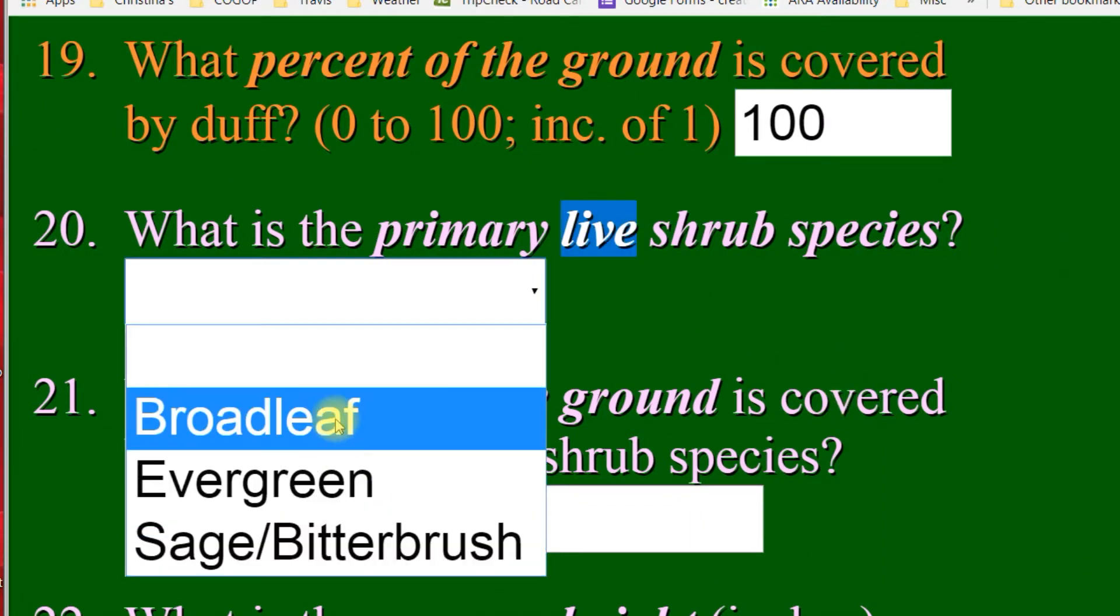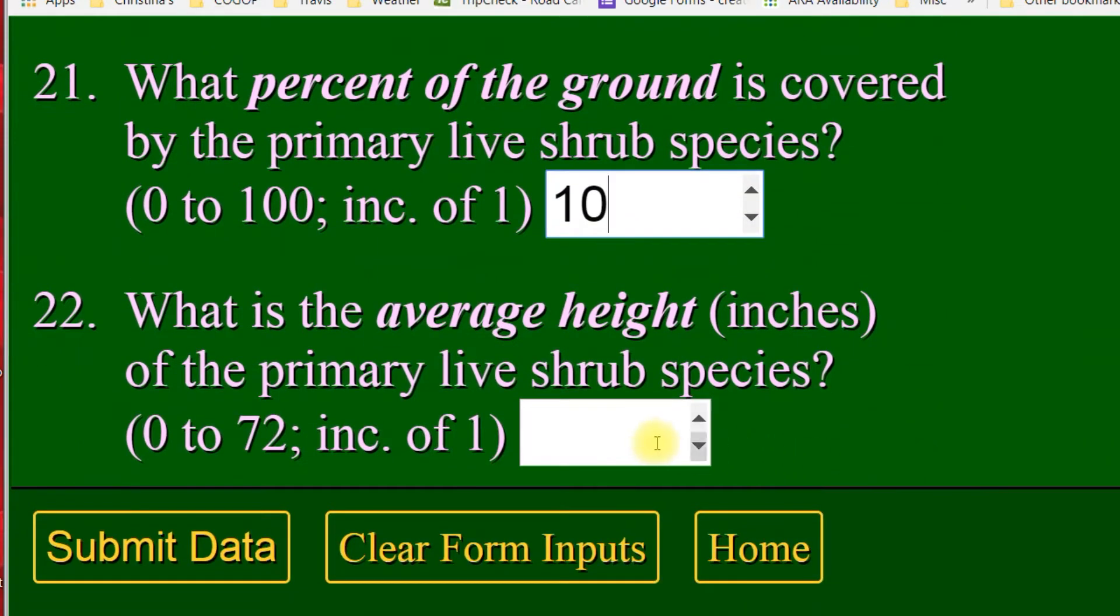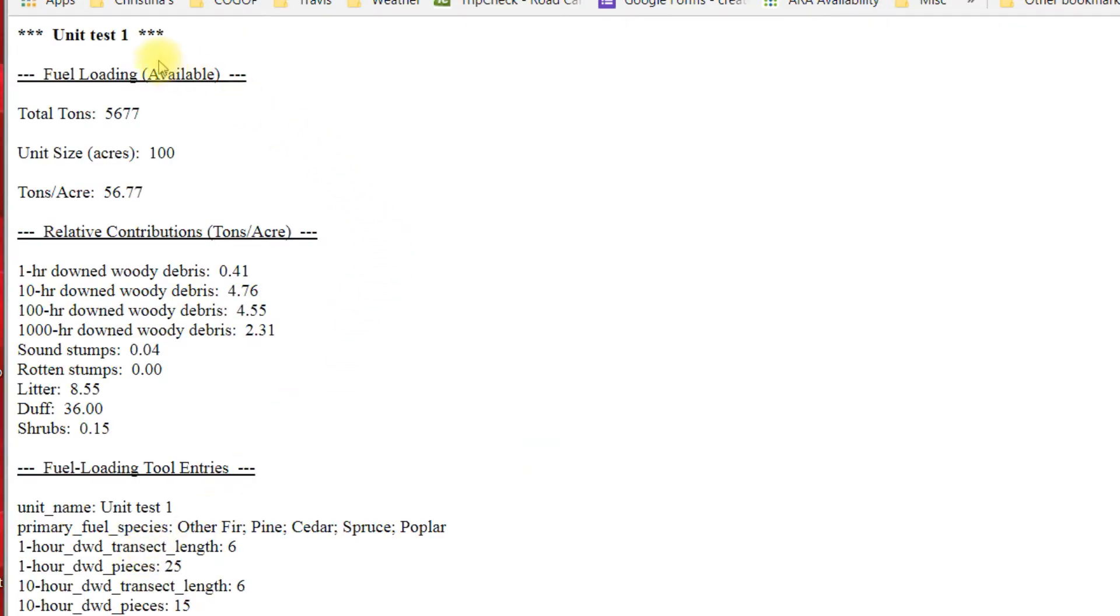What percentage of ground cover? It does matter whether it's broadleaf, evergreen, or sage and bitter brush. So, you pick that. You give it a number of what's the percentage of ground cover and the average height. Get all that in there. You click submit data. This program is just available fuel loading. It assumes everything is dry and available to consume. So, this is worst case scenario. After you get your fuel loading, you can take those numbers and put them into any other consumption model you want to put it into. But this gives you what's available out there.